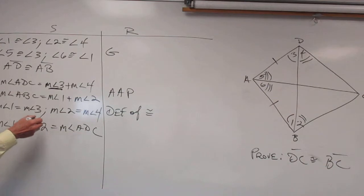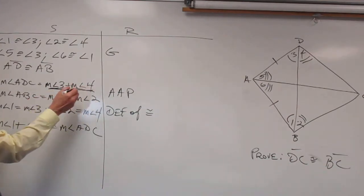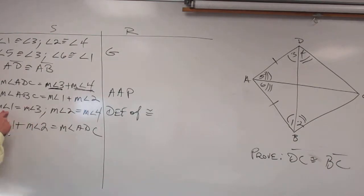So let me just say again, I took, because I had a measure of angle 3 and a measure of angle 4, I replaced them with 1 and 2, because they're equal to 3 and 4.